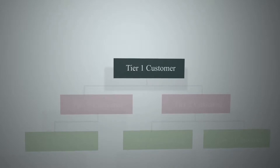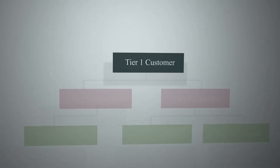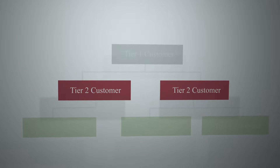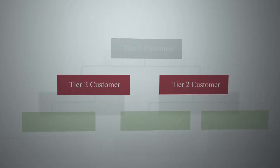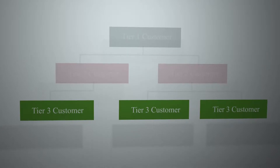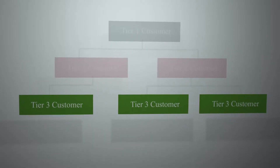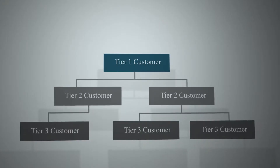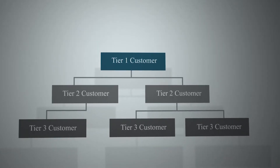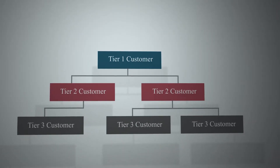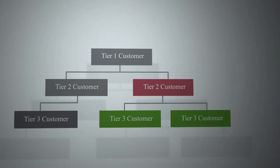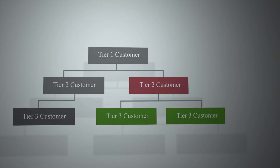Tier 1 customers are Tomato's customers. Tier 2 customers are the customers of Tomato's customers. Tier 3 customers are the customers of the customers of Tomato's customers. We use a hierarchy structure designed to allow a single tier 1 Tomato account to have multiple tier 2 accounts, and for each tier 2 account you can have multiple tier 3 accounts.